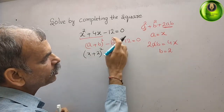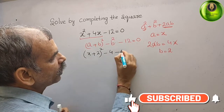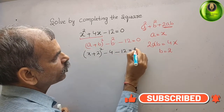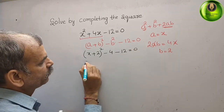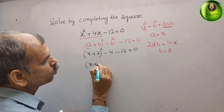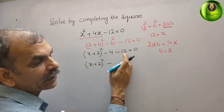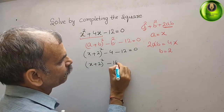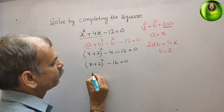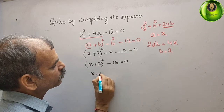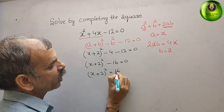Minus b squared — that means 2 squared is 4 — minus 12 gives you 0. Solving, we get (x plus 2) whole square minus 4 minus 12 is minus 16, which gives you 0. Bringing minus 16 to the right side, we get (x plus 2) whole square equals 16.